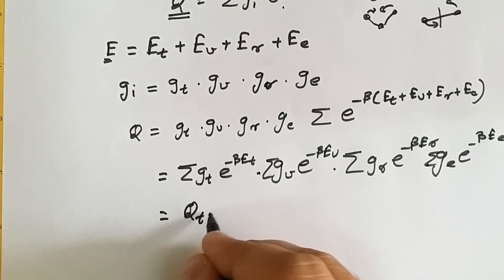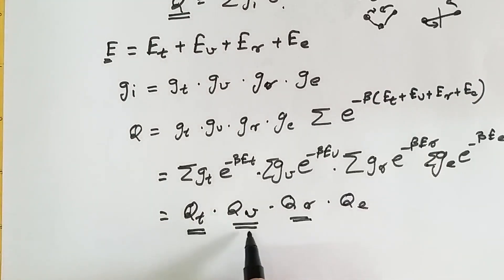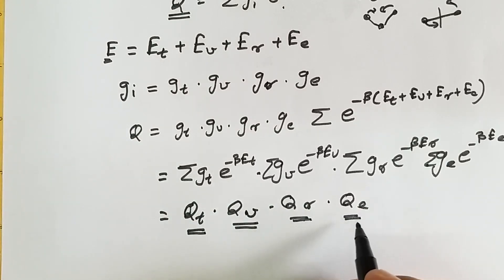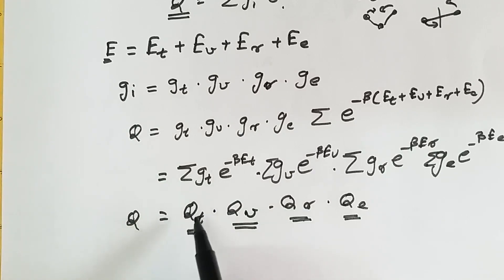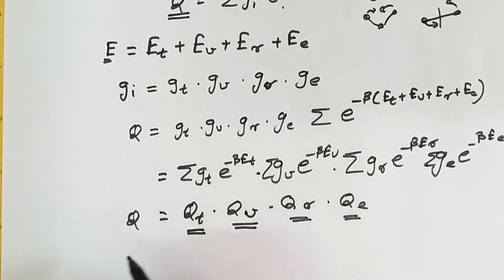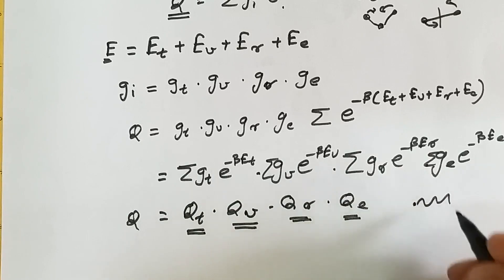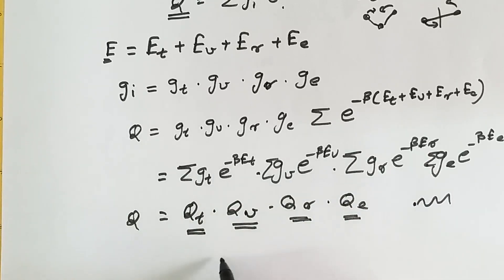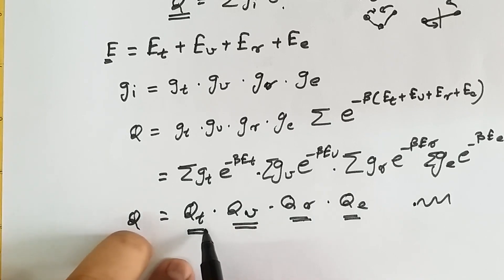So we can write the total partition function as Q = Q_T · Q_V · Q_R · Q_E. If a molecule shows only translational motion, then the associated partition function is the translational partition function. For example, a monoatomic molecule will show only translational energy and electronic energy, so its partition function will be due to only translation and electronic contributions; vibrational and rotational parts won't appear.